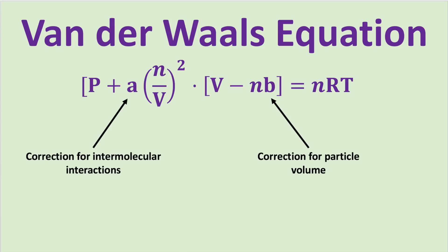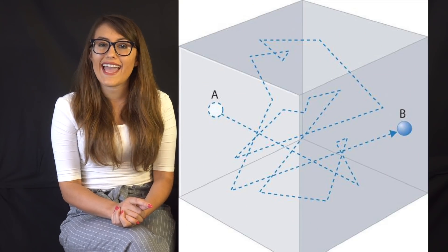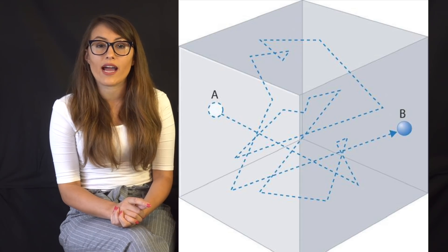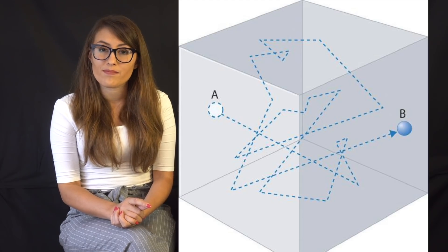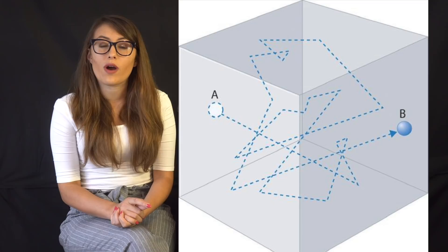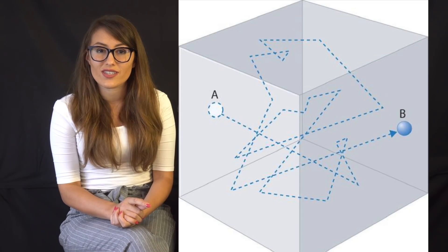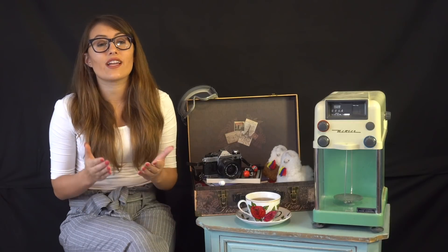The last concept that I want to briefly cover is diffusion. Diffusion is the spread of gas particles throughout a container. When a gas is released into a container, the particles spread out evenly until they reach an equilibrium. This is why when someone is cooking in the kitchen, it can take a few minutes before you can smell it in the other room.